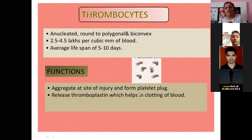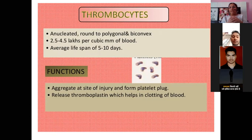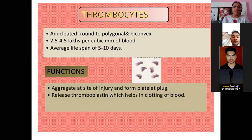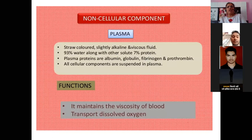Thrombocytes aggregate at the site of injury and form a platelet plug to stop bleeding. They release thrombocytin, which helps in the clotting of blood. This clotting mechanism ensures blood does not keep flowing out of a wound. Thrombocytes also form fibrinogen and fibrin threads as part of the clotting process.